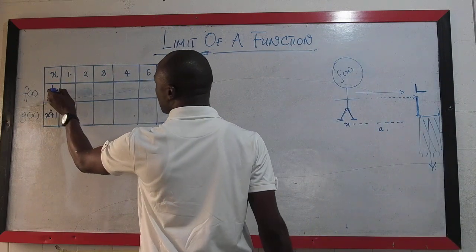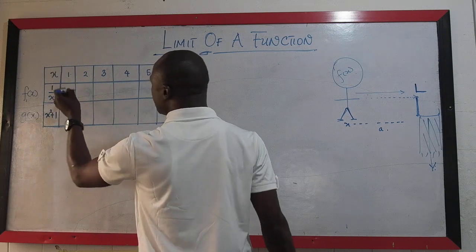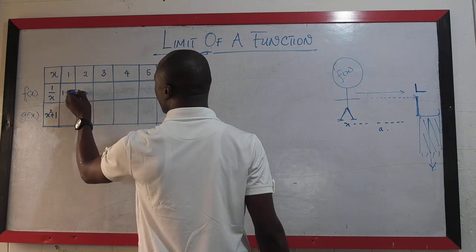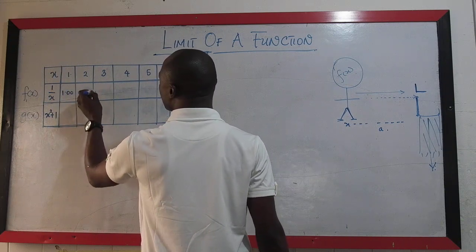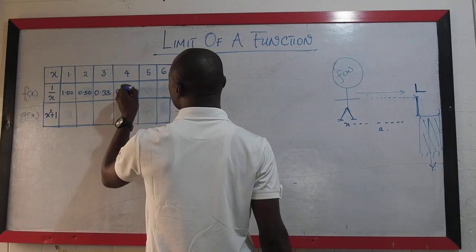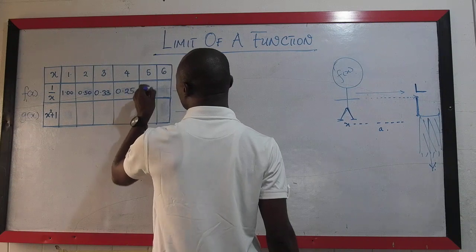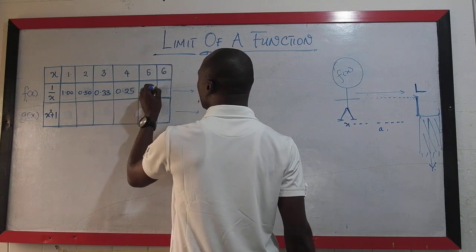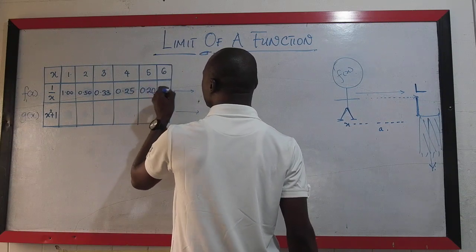This is going to give us 1.00 two decimal places. This is going to give us 0.50. This is going to give us 0.33. This is going to give us 0.25. This is going to give us 0.20. And this is going to give us 0.18.